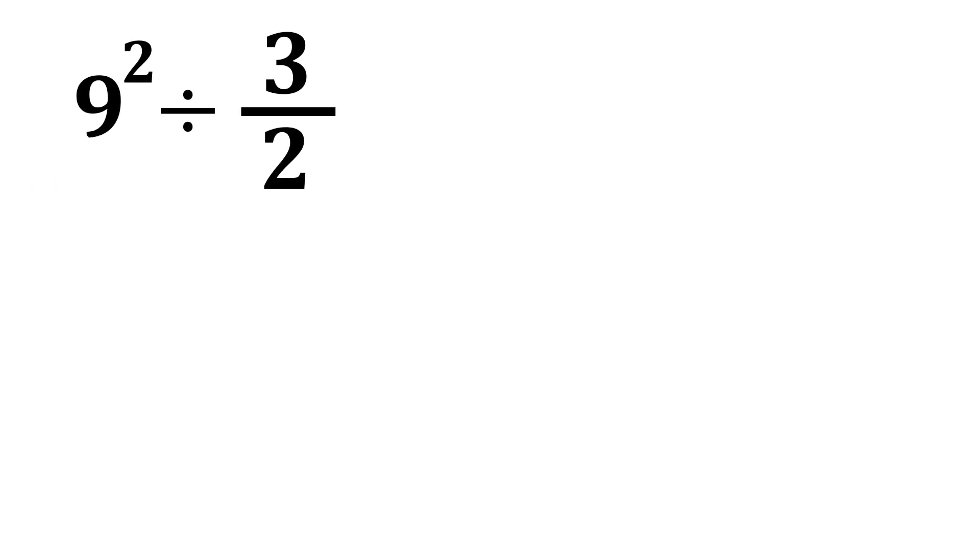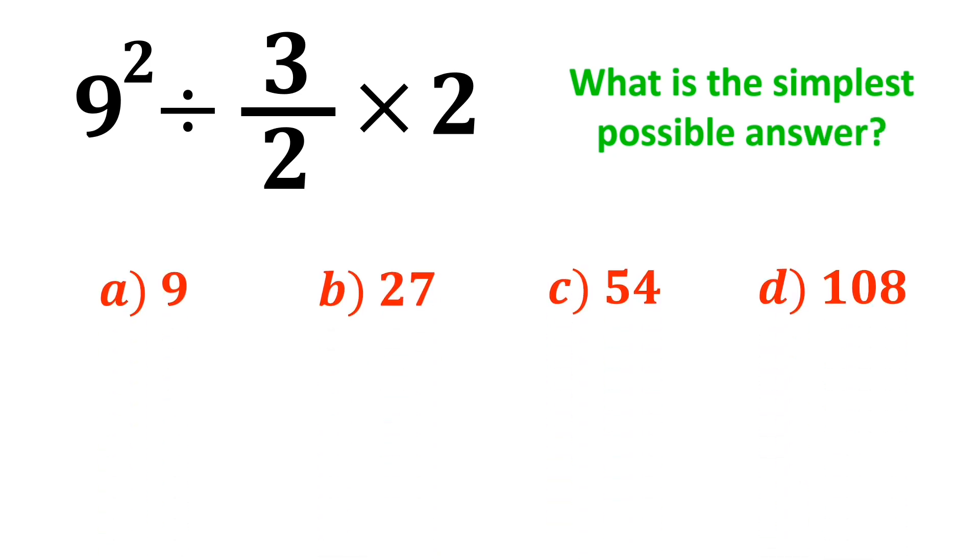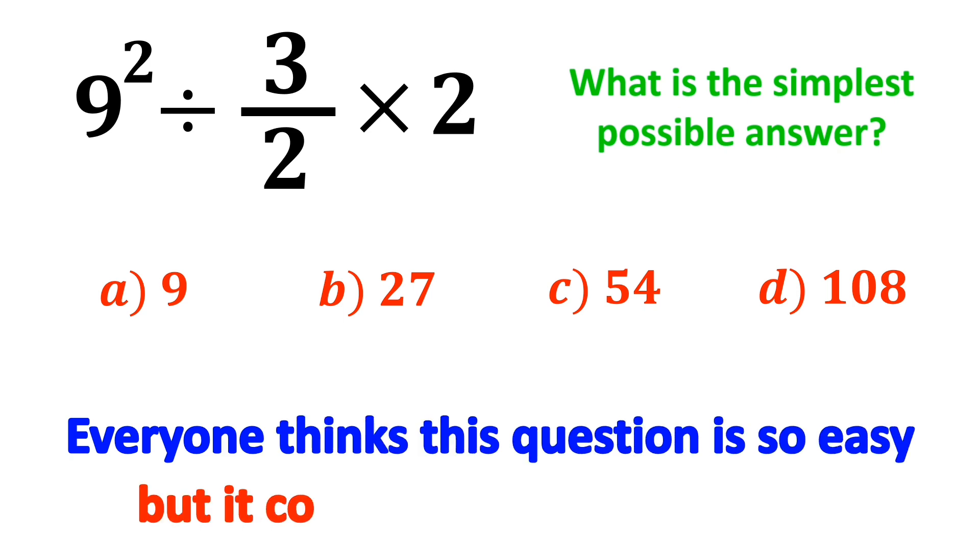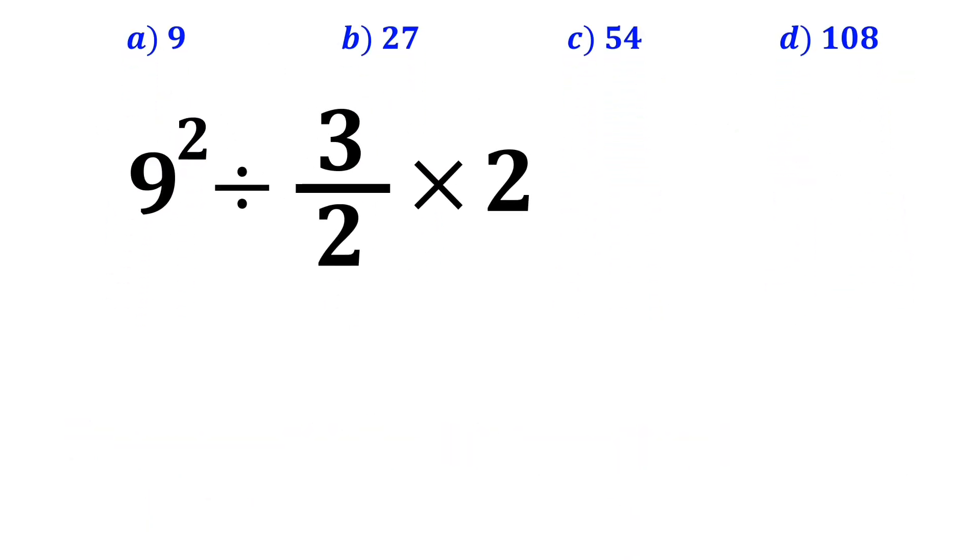If we have 9 to the power of 2 divided by 3 over 2 multiplied by 2, then what is the simplest possible answer for this expression? Which option do you believe is the correct answer to this question? Everyone thinks this question is so easy, but it confuses almost everyone. Let's dive in and break it down step by step together.